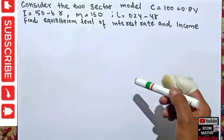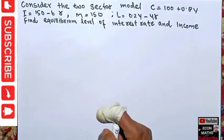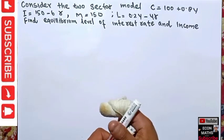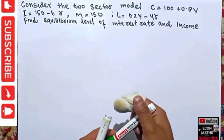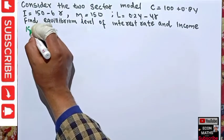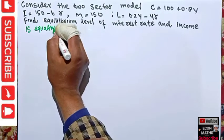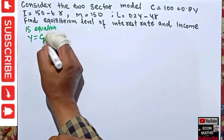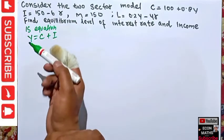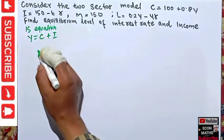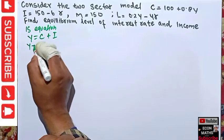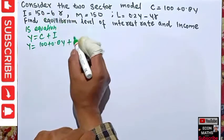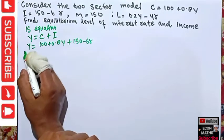The question asks us to find the equilibrium level of interest rate and income. For that, first we will find the product market equilibrium, which means finding the IS equation. We know the product market is in equilibrium where Y = C + I. So substituting, Y = 100 + 0.8Y + 150 - 6R.